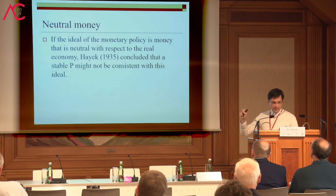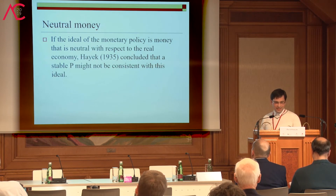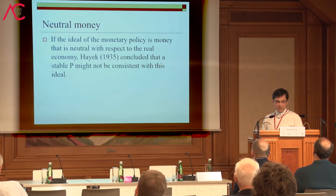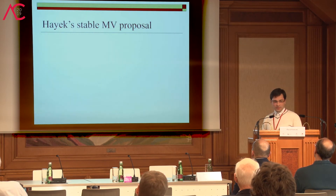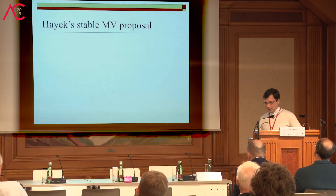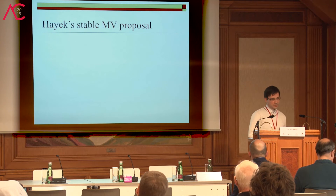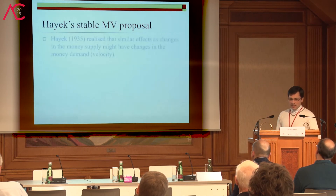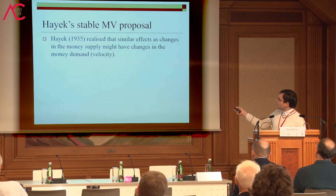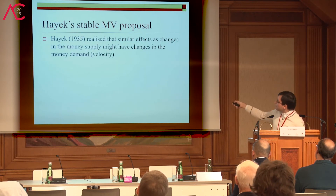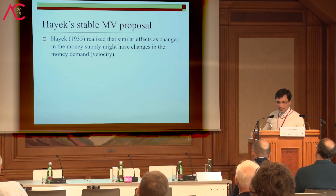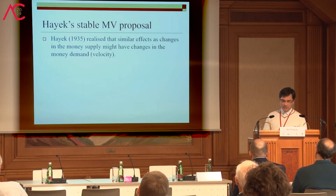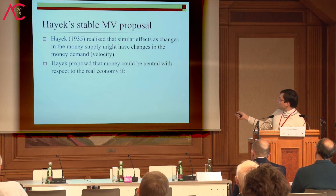If the ideal monetary policy is one where money is neutral with respect to the real economy, then Hayek concluded that stable price level might not be consistent with this ideal. He proposed a different kind of policy: he recommended stabilizing the MV term. Hayek realized that not only shocks to money supply but also shocks to the demand for money — or velocity of circulation — might have similar effects. There is a very strong connection between money demand and velocity.